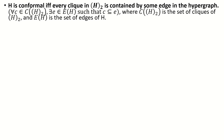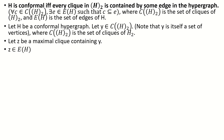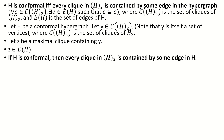Let's prove one direction at a time. Suppose a hypergraph is conformal, and let y be a set of vertices that induce a clique in the two-section of h. We know that in a graph such as our two-section, a clique is a subset of at least one maximal clique. So let z be a maximal clique that contains y. By our assumption that h was a conformal hypergraph, z must be an edge in h, specifically a maximal by inclusion edge. So we can now say that if h is conformal, then every set of vertices inducing a clique in the two-section is contained by some edge in the hypergraph.